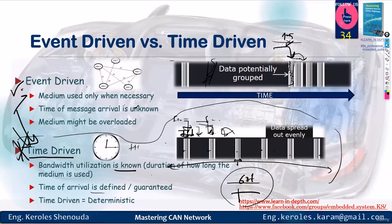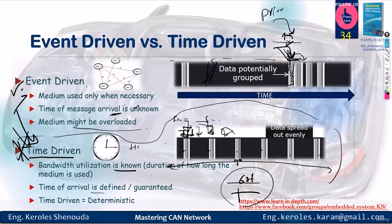CAN is event-driven — the bus is available anytime for anyone wanting to send any packet. The time of message arrival remains unknown. This event-driven system can potentially become overloaded because all ECUs might decide to transmit at a particular moment. At such times, the lowest ID will have the highest priority and can proceed — for instance, if there's an airbag alert, it can pass through even amidst all the traffic.